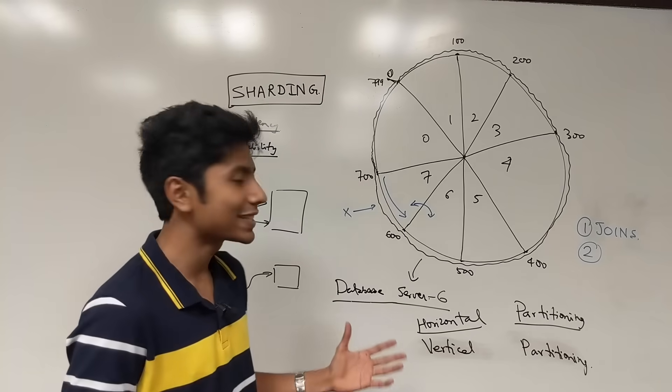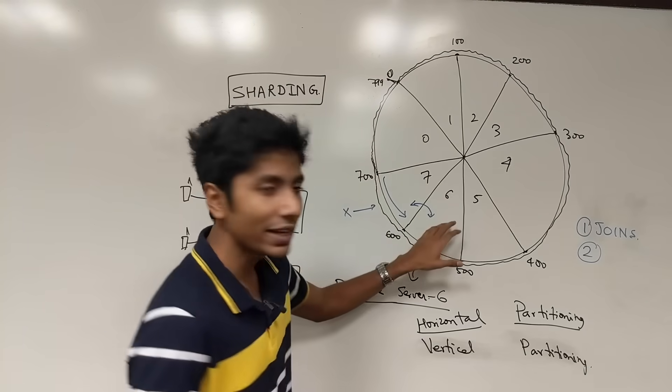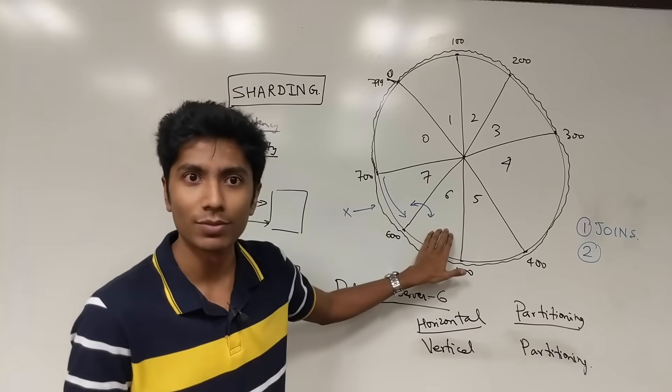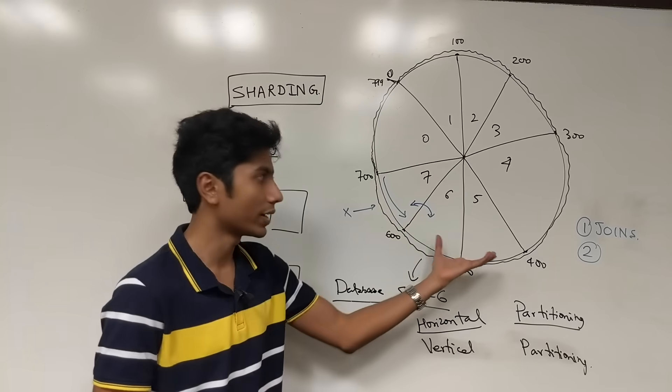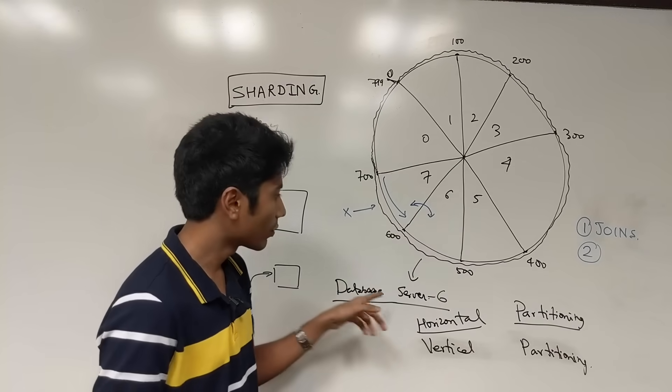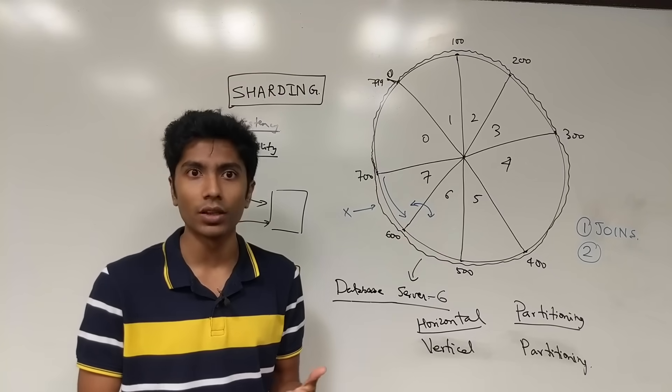The second point comes when you look at the pizza and you realize that this is completely inflexible. The shards are inflexible. You can't have more pizza slices or less pizza slices, it's already done.